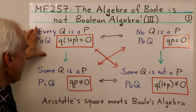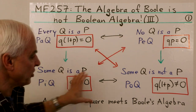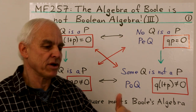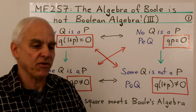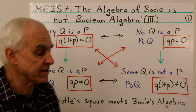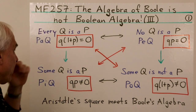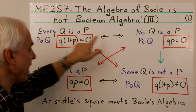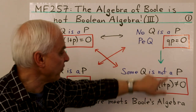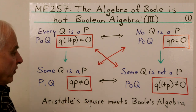So we're looking at Aristotle's square of opposition — these four different types of forms which figure in Aristotle's syllogisms. And we have algebraic equivalents of them now through Boole's algebra.